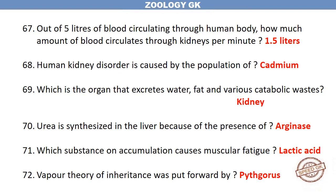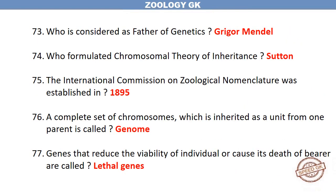1.5 litres. Human kidney disorder is caused by pollution of cadmium. The organ that excretes water, fat, and various catabolic wastes is the kidney. Urea is synthesized in the liver because of the presence of arginase. Which substance on accumulation causes muscular fatigue? Lactic acid.